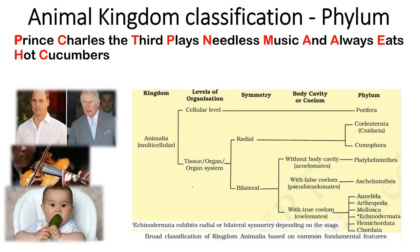We need to remember this particular picture, because it explains not only the classification of animal kingdom but also the body symmetry, the level of organization, and the properties of all those phyla. Let's talk about them one at a time. First, how to arrange them.